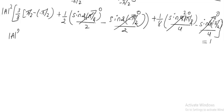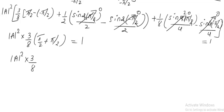We are left with mod A squared into (3 by 8) into (pi by 2 plus pi by 2). This becomes mod A squared into (3 by 8) into pi equals 1. Therefore mod A squared equals 8 divided by 3 pi, so A equals the square root of 8 divided by 3 pi.